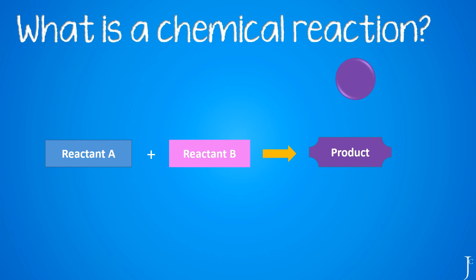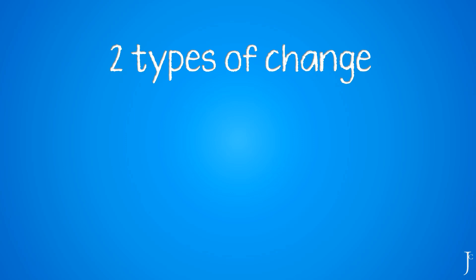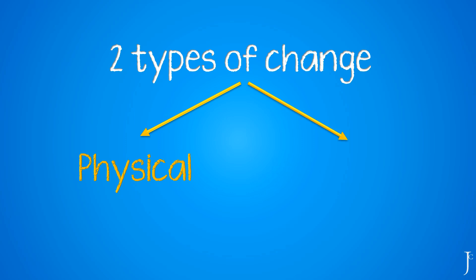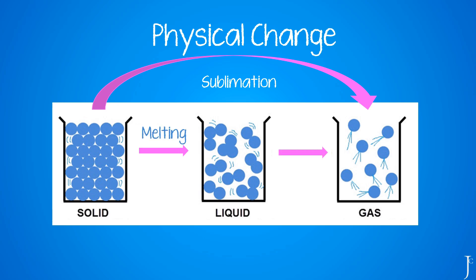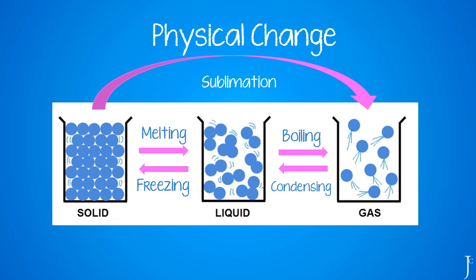There are two types of change that can occur: physical change and chemical change. Physical change is when you have a change of state — you do not create a new substance but you change the form. For example, going from a solid to a gas is called sublimation. From a solid to a liquid is melting, liquid to a gas is boiling, gas to a liquid is condensing, and liquid to a solid is freezing. None of these processes create a new substance, so they are called physical changes.